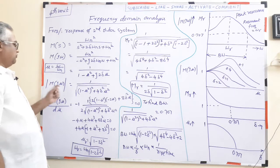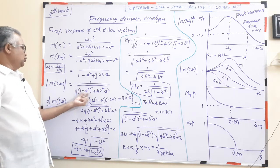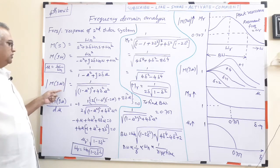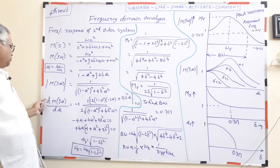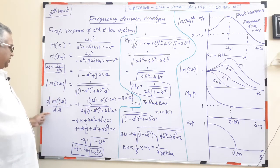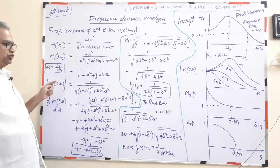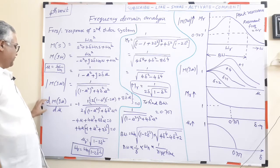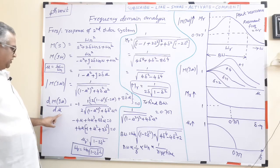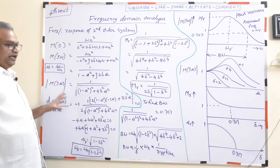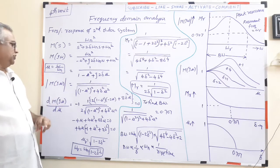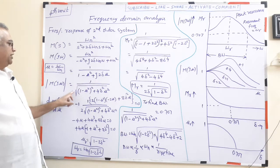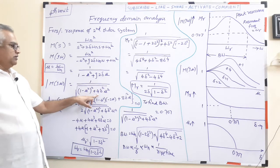We need to find for what value of μ the magnitude is maximum. This is possible by differentiating the magnitude expression with respect to μ and equating to zero. The magnitude is of the form 1/√x, so we differentiate accordingly.